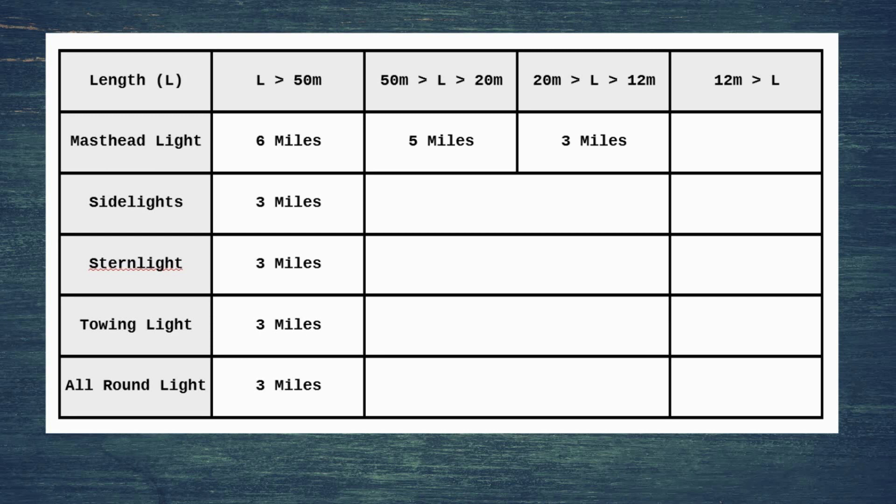Now for vessels between 50 and 12 meters, all the other lights are going to be the same. So sidelights, stern lights, towing lights, and all-round lights, they're all going to have to be less than both of those masthead light ranges but still not the minimum. So of course they're going to be 2 miles. It's less than that 3 mile range, but there's still space below it for the smallest vessels.